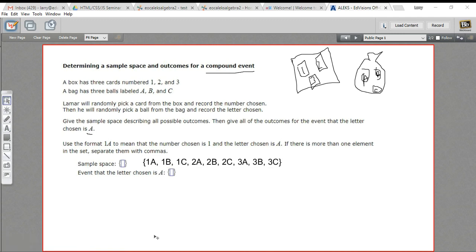Now we want to make a set that shows the event that the letter chosen is A. We're still choosing a card. So you could have one A or you could have two A or you could have three A. Those are all the possible outcomes where the letter chosen is A. So that is how to write a sample space and an outcome for a compound event.